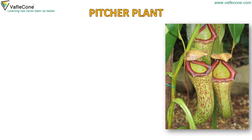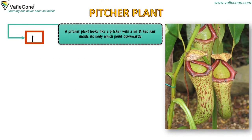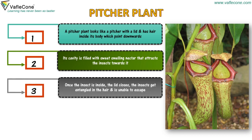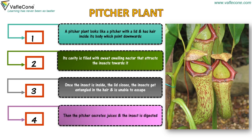A pitcher plant looks like a pitcher with a lid and has hair inside its body which point downwards. Its cavity is filled with sweet-smelling nectar that attracts insects towards it. Once the insect is inside, the lid closes, the insect gets entangled in the hair and is unable to escape. Then the pitcher secretes juices and the insect is digested.